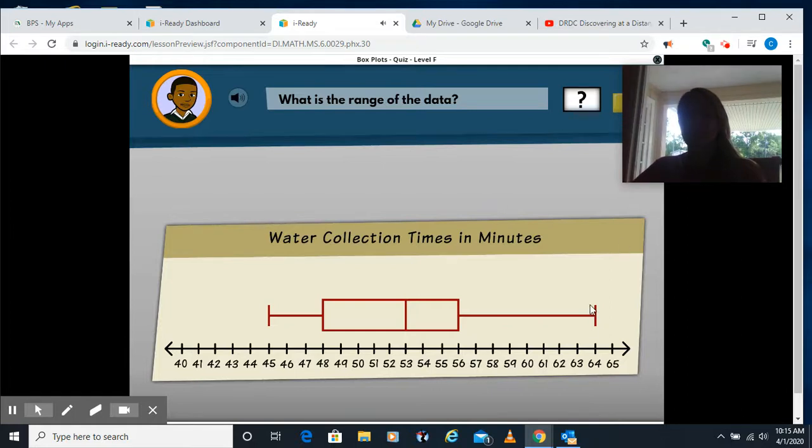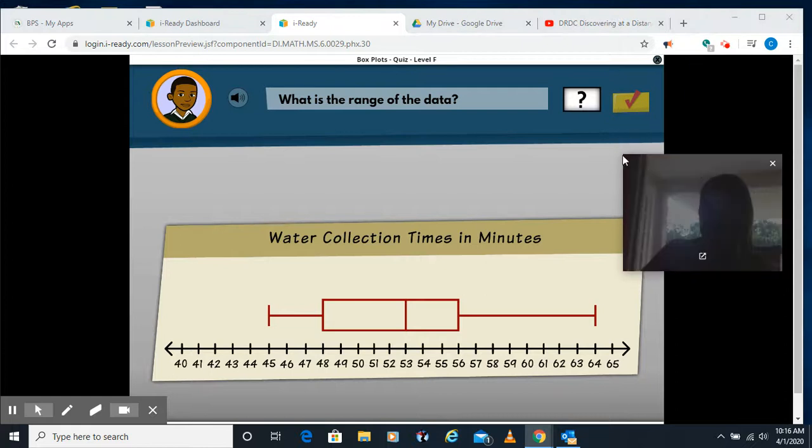Remember, our range is our greatest data point minus our smallest data point, so our numbers range here from 45 to 64, so if I do 64 minus 45, right? I would get 19, so I'm going to type 19.